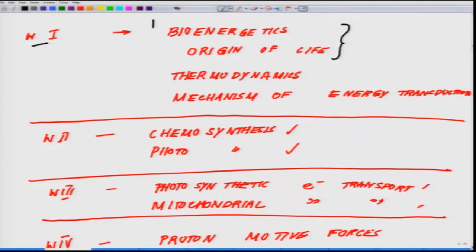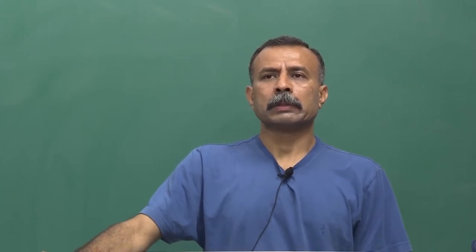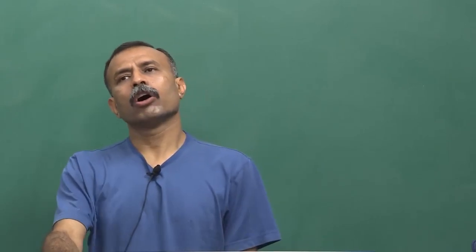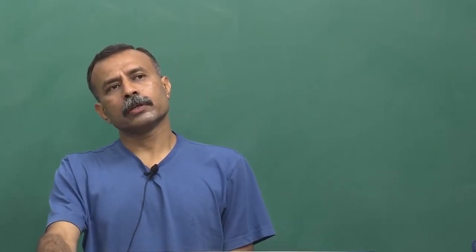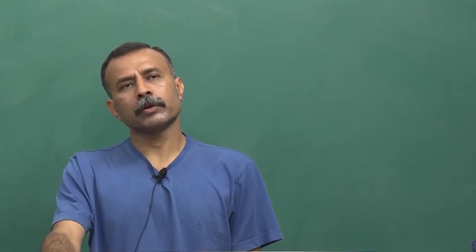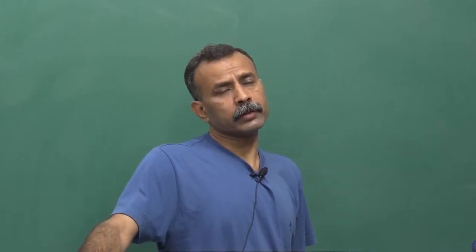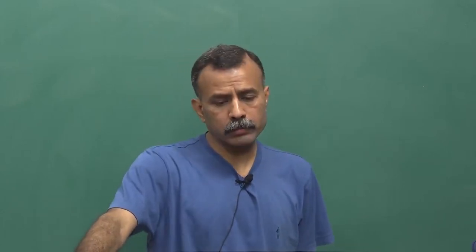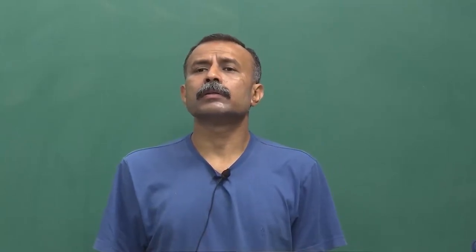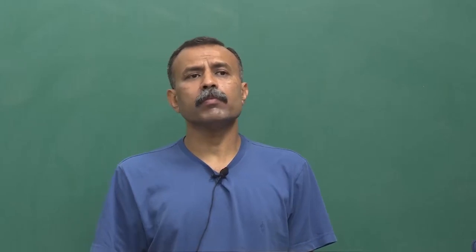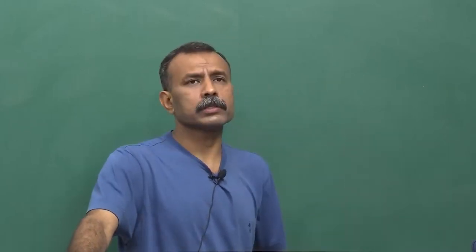In week two, we will talk in a bit more detail about chemosynthesis and photosynthesis, and exactly how these processes are throwing light on our understanding of the core energy transformation processes happening on the floor of the earth or underneath the ocean bed, governing much of our ecosystems — from extreme ecosystems to normal ecosystems on the floor of earth.